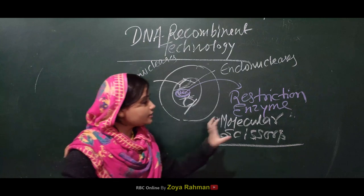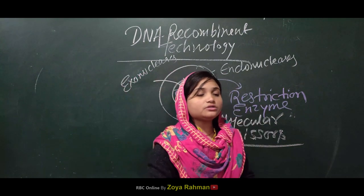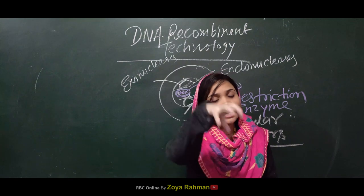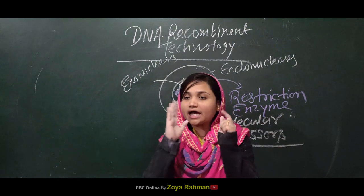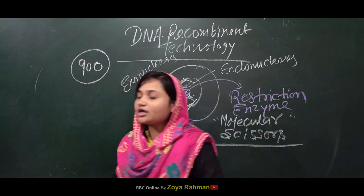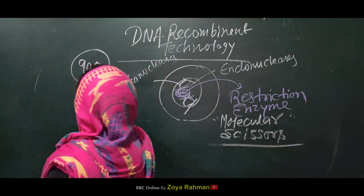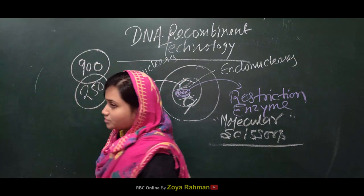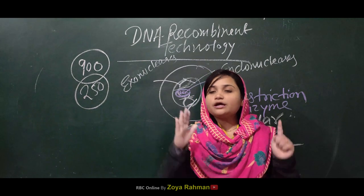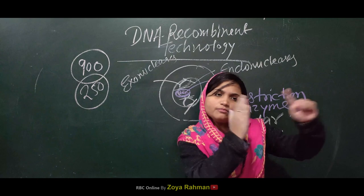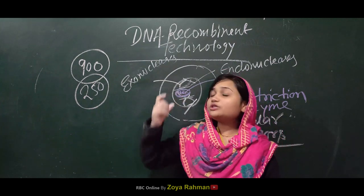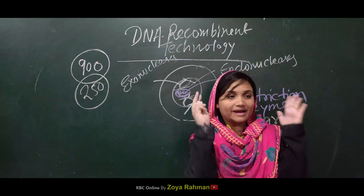How these restriction enzymes are synthesized — this is what biotechnology will teach us. There have been 900 restriction enzymes in total, which have been obtained from approximately 250 bacteria. We have made 900 restriction enzymes removed from different types of DNA so that we can use them in any application or process.